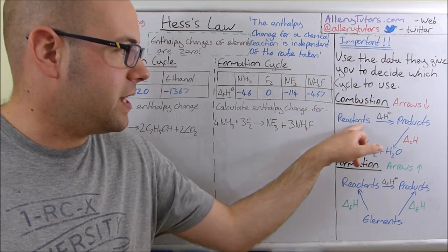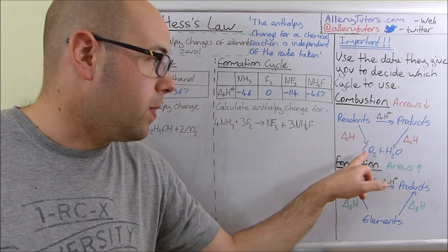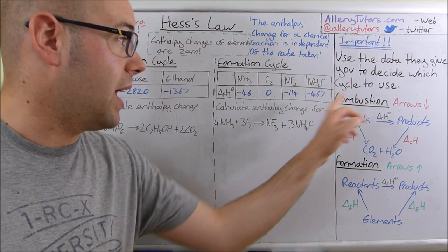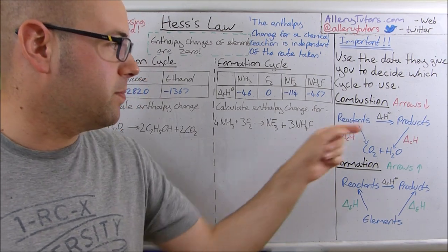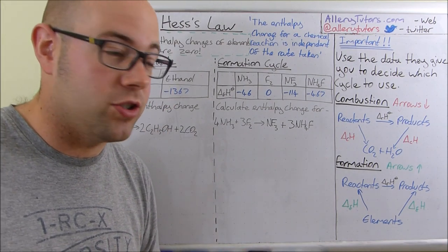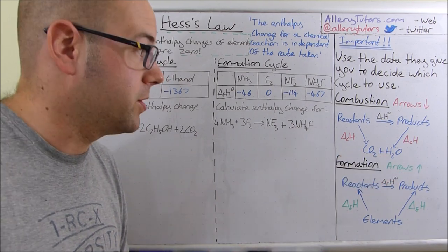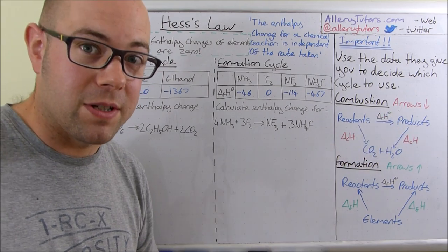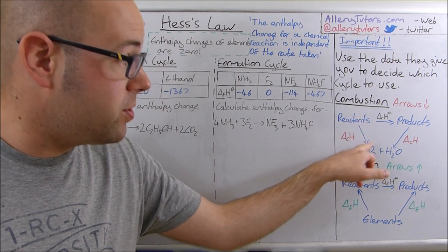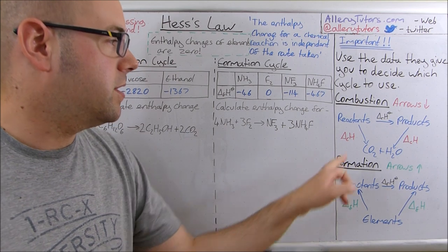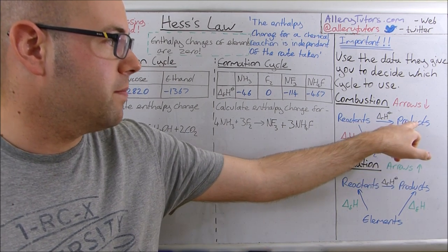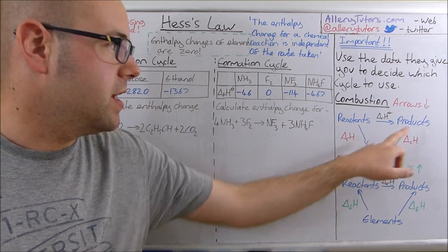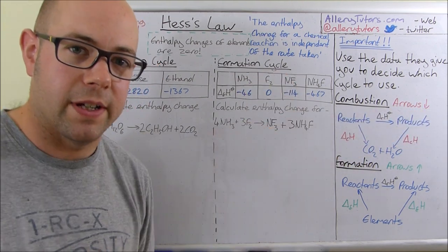Your combustion cycle basically has this setup. So we have reactants on the left, products on the right, but on the bottom you always have carbon dioxide and water. The enthalpy of combustion is basically the enthalpy change when one mole of a substance is completely burnt in oxygen to form carbon dioxide and water. The arrows point downwards — from reactants to produce CO₂ and water, and from products producing CO₂ and water. These are called the enthalpy of combustion, delta CH.